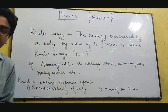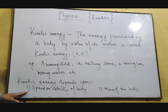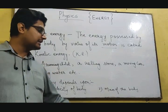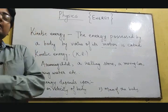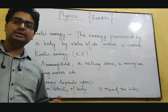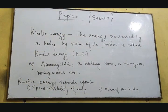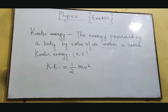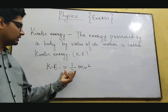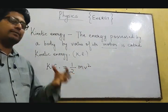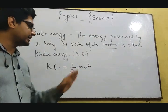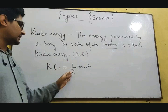Kinetic energy depends upon two factors. First is the speed or velocity of the body — with what speed or velocity the body is moving. Second is the mass of the body — if the mass is very big then kinetic energy will be very large; if the mass is very small then kinetic energy will also be small. The formula to calculate the kinetic energy of a moving object is: KE = ½ × mass × velocity squared. That is half into M into V squared. You have to square the velocity, multiply by mass, and then multiply by half (1/2), and you will get the kinetic energy.